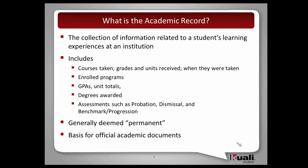Here's a kind of high-level picture — some points that help us understand academic record. The big one is it being a collection of information related to a student's learning experiences at an institution. When we think about those learning experiences, this could include courses taken, obviously the grades and units received, when it was taken, programs enrolled in, grade point averages to get a qualitative perspective, unit totals for a more quantitative perspective, and different kinds of program outcomes like degrees and credentials.